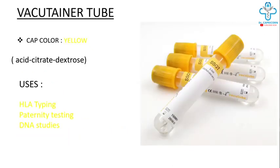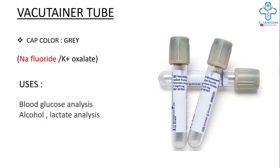The yellow color tube contains acid citrate dextrose and is used for HLA typing, paternity testing, and DNA studies.